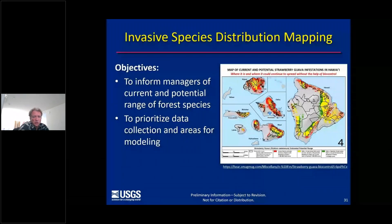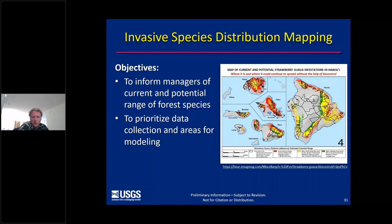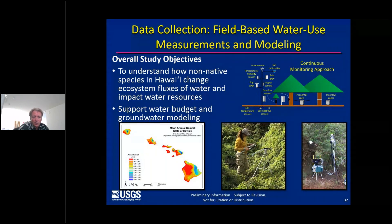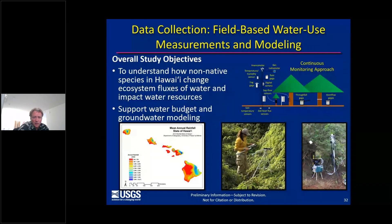In terms of the invasive species distribution mapping, the objective would be to inform managers of the current and potential range of forest species. Shown here is an example mapping the current and potential infestations of strawberry guava across the state. This information could also be used to prioritize data collection and areas for modeling. The next step includes a data collection effort, with the overall objective of understanding how non-native species in Hawaii change ecosystem fluxes of water and impact water resources, and to support the water budget and groundwater modeling efforts.